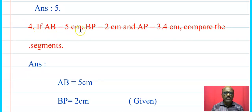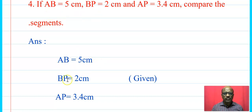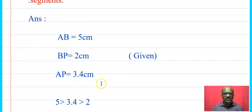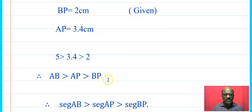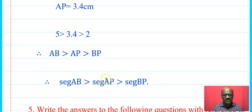Next: if AB = 5 cm, BP = 2 cm, and AP = 3.4 cm, compare the segments. AB is the largest and BP is the smallest. Since length AB = 5 cm, AP = 3.4 cm, BP = 2 cm, therefore AB > AP > BP.